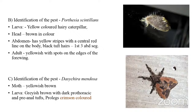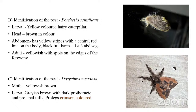The next hairy caterpillar is Portacea scintillans, whose larva also feeds on cotton and red gram. It has a yellowish brown head, a yellow dorsal stripe with a central red line, and tufts of black hairs dorsally on the first three abdominal segments. The adult is yellowish in color with spots on the edges of the forewings. Its life cycle is similar to Euproctis fraterna.